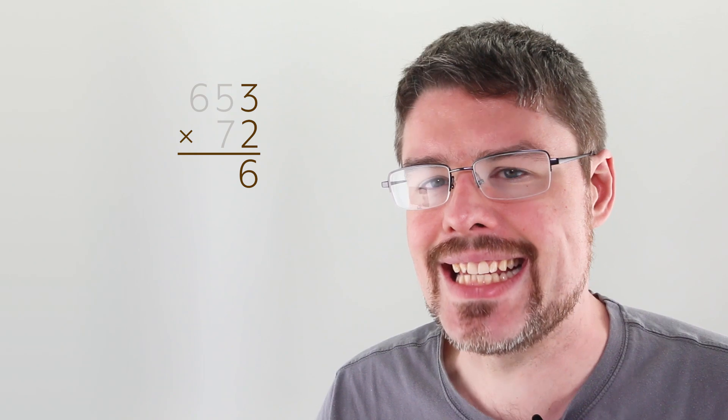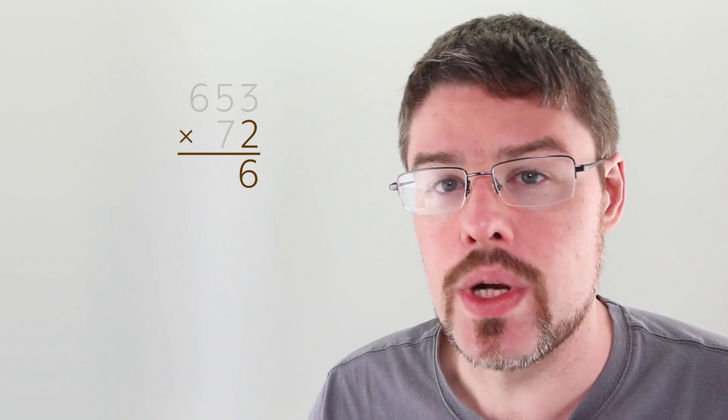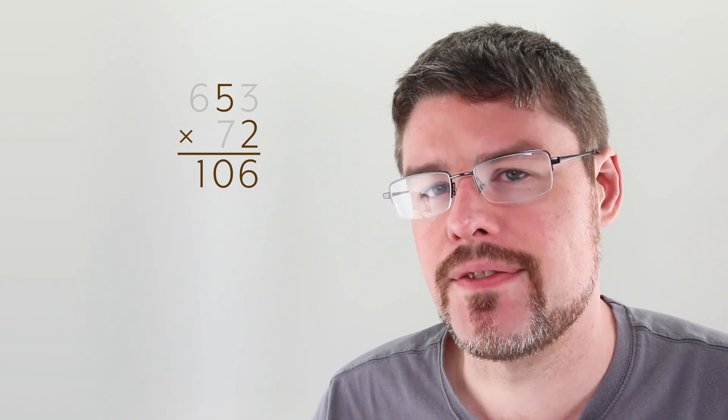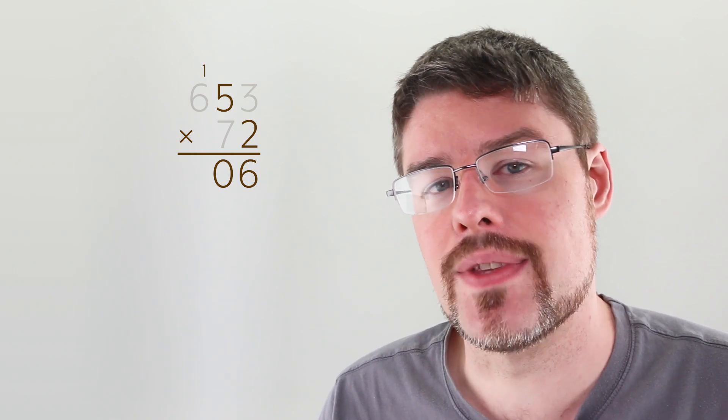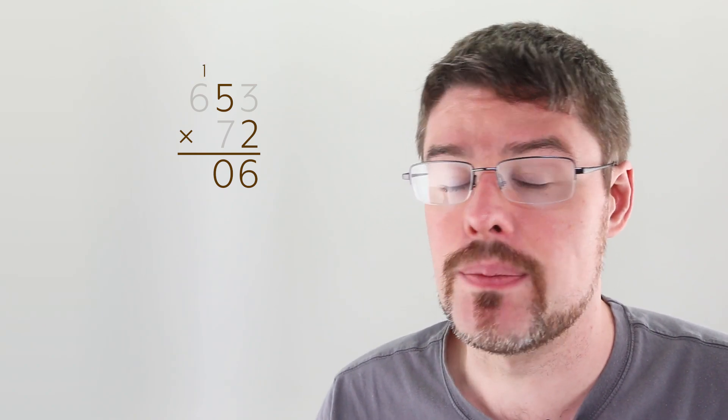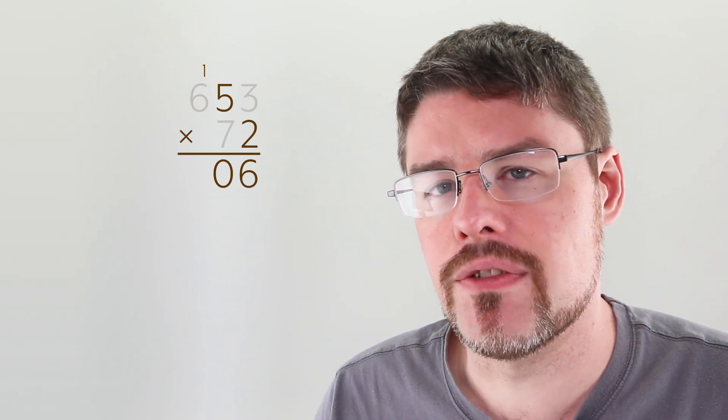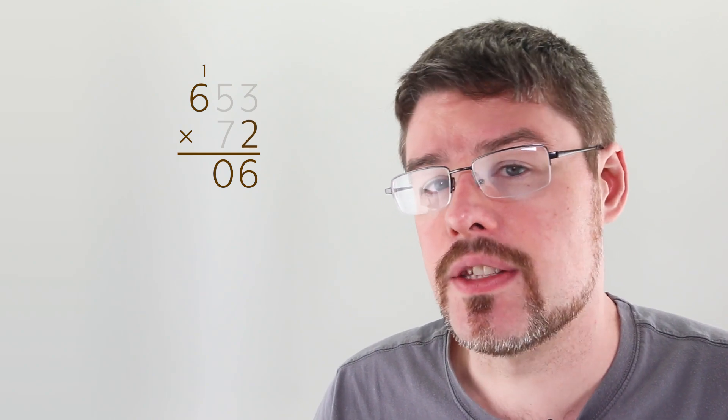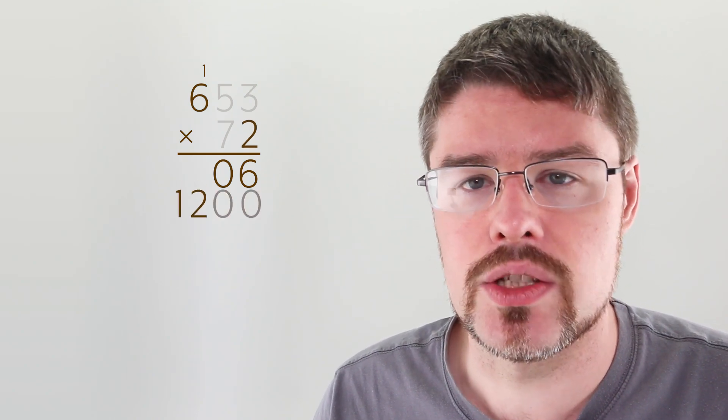Now we're going to move to the next digit in the top number, which is a 5. 2 times 5 gives us 10, so we're going to have to carry this 1 here up to the top of the 6. But we're going to have to do something interesting with it, which I'll show in a moment. Let's move to the final number on the top, the 6, and multiply it by the 2. This gives us 12, or in this case 1,200.